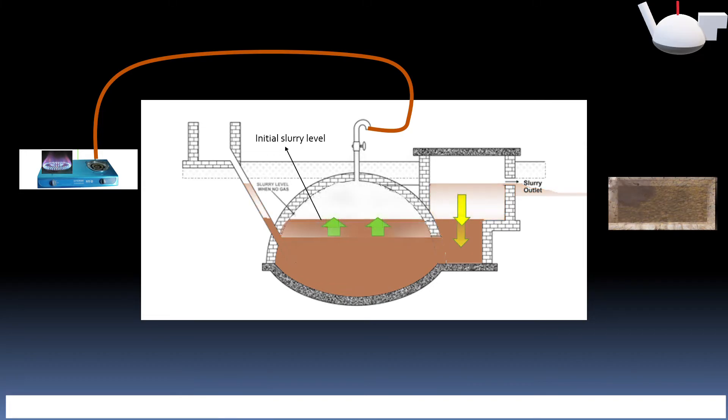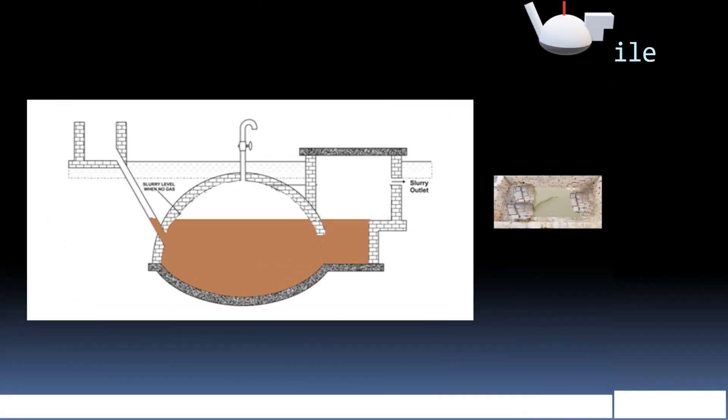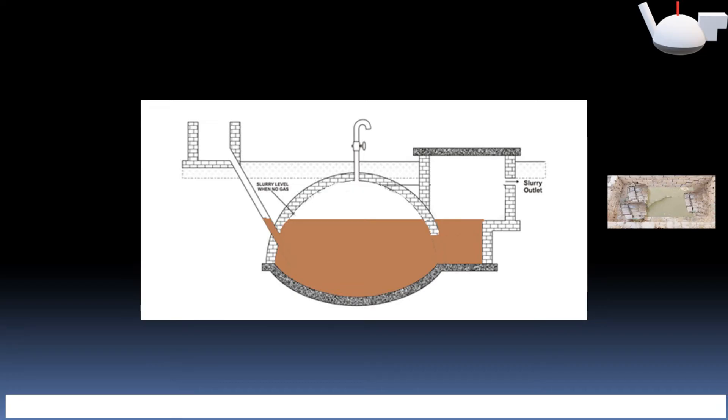When all the gas has been used, slurry level in the outlet tank will be at its lowest level. Now again, fresh cattle dung slurry is added and gas starts forming and process is repeated. It is important to know how much slurry is needed to start and how much is added daily in the biogas plant.